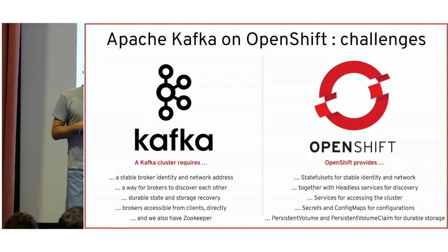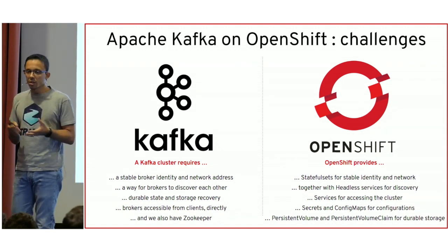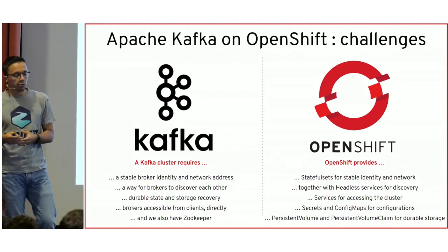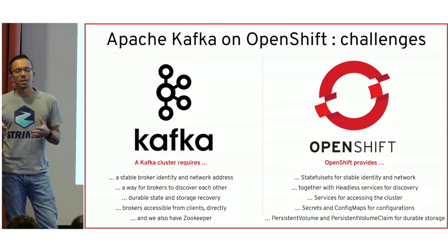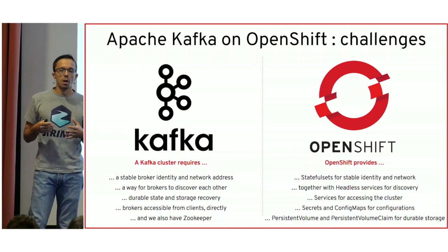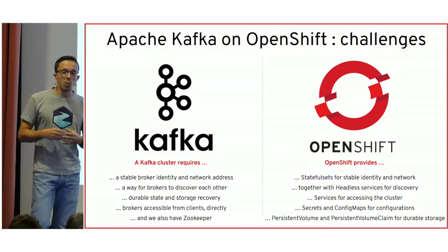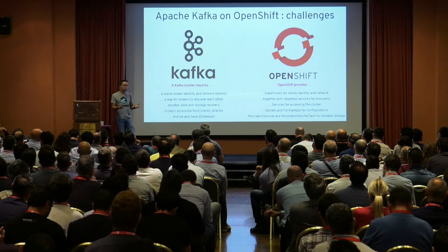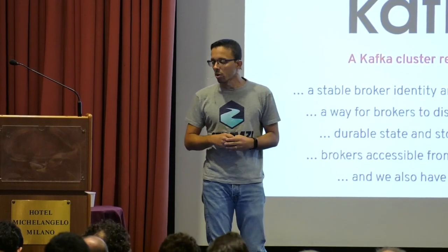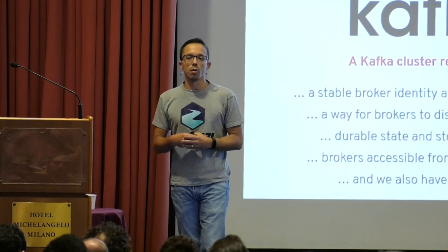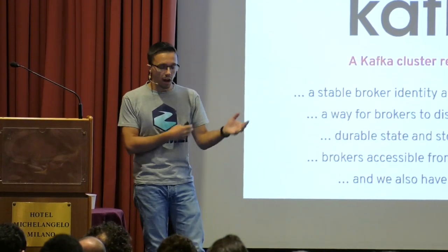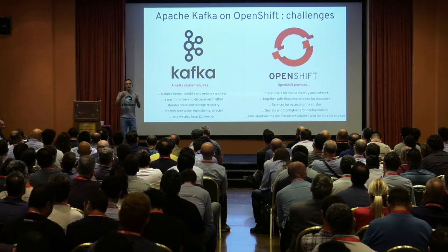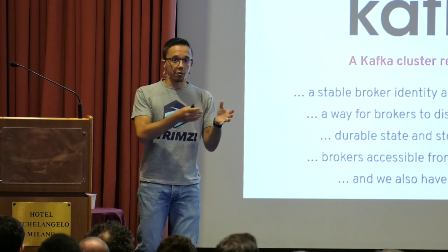On one side there are features that Kafka needs, and on the other side there is what OpenShift provides to run Kafka. Native Kubernetes resources like StatefulSets can be used to deploy Kafka on OpenShift. We can use ConfigMaps and Secrets for storing configuration and TLS certificates, and PersistentVolumes and PersistentVolumeClaims for handling the storage of Kafka messages.